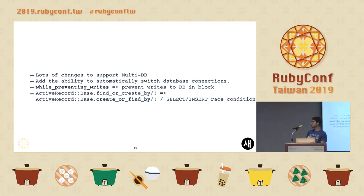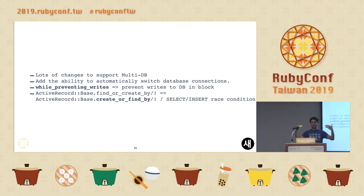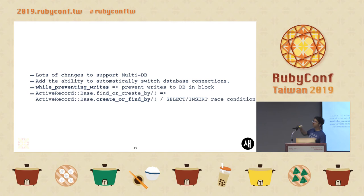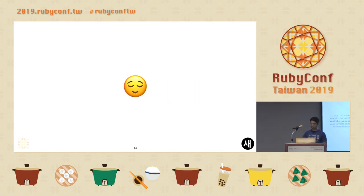Another improvement to overcome a race condition: if you've used find_or_create, it's basically a select or insert. The problem is that if there are three or four different threads trying to do the same thing, it might blow up — they didn't find the record, and then all try to create and insert, raising an error because the same objects are being inserted. Now you can instead do create_or_find, which first tries to create and then if it doesn't raise, tries to find.